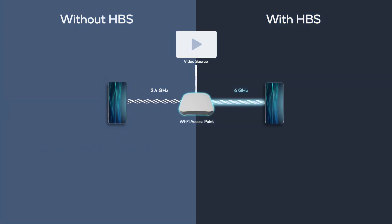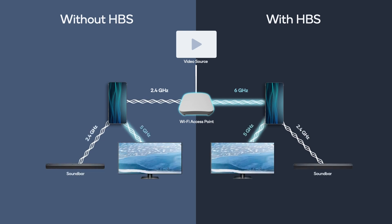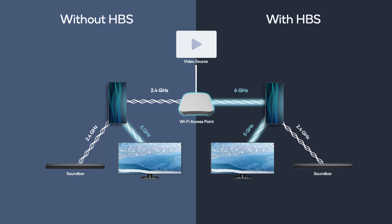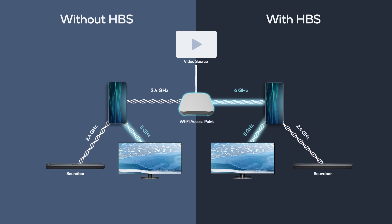To demonstrate the value of using high bands for two connections, we set up a test in our lab of a scenario common across several applications. 4K video of increasing quality is streamed wirelessly to a phone, which casts the video to a TV over Wi-Fi and to a soundbar using Bluetooth. On the left side you see dual band simultaneous (DBS), with 5 GHz connected from the phone to TV and 2.4 GHz used for the access point to phone and phone to soundbar.